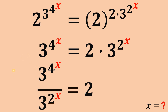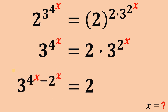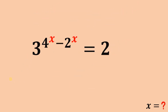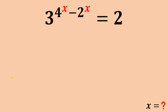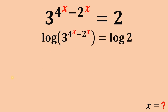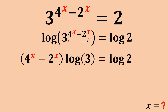Since we have the same base, the left-hand side can be rewritten as 3 raised to the power of 4 raised to the power of x minus 2 raised to the power of x. Now we are ready to solve for x. Let's take the logarithm of both sides. Applying the laws of logarithm, the exponent of 3, which is 4 raised to the power of x minus 2 raised to the power of x, comes down. Then divide both sides by logarithm of 3.